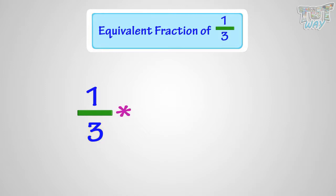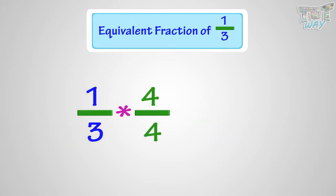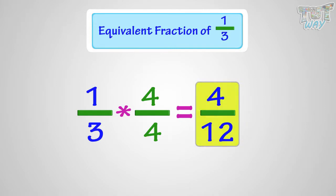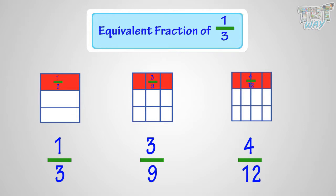We know we have to multiply both the numerator and denominator with the same number to get the equivalent fractions. So here we multiply with 3. Multiplying both the numerator and denominator with 3, we will get 3 by 9. So 3 by 9 is an equivalent fraction of 1 by 3. Now let's multiply with 4. Multiplying with 4, we will get 4 by 12. So 4 by 12 is also an equivalent fraction of 1 by 3. Here is a picture to prove it: 1 by 3 equals 3 by 9 equals 4 by 12 are all representing the same portion of the figure. So, kids, now you know how to make equivalent fractions.